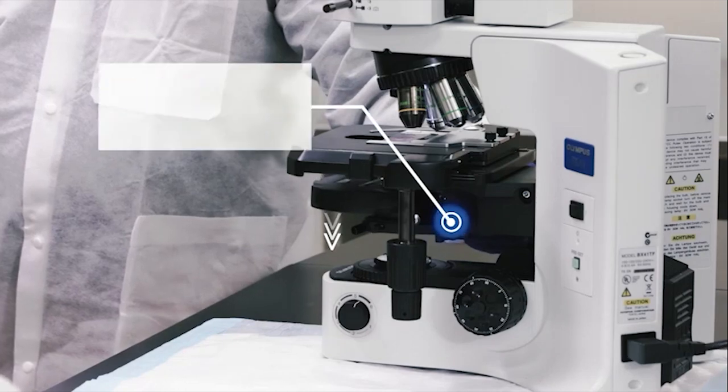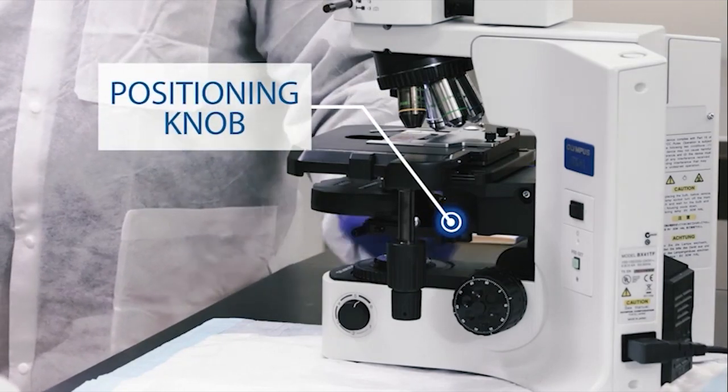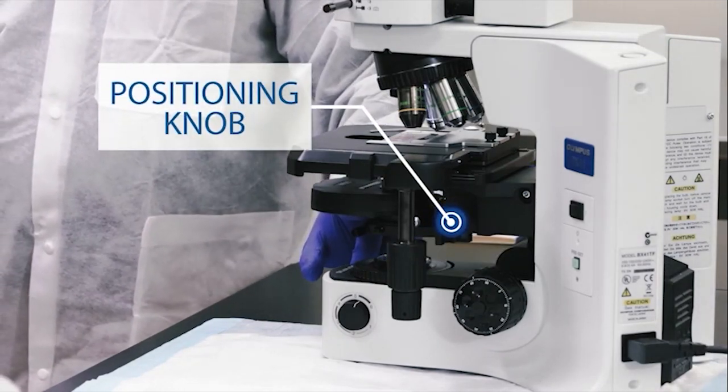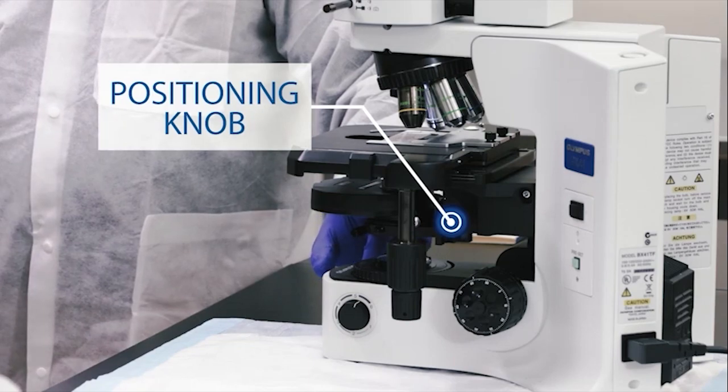Lower the condenser diaphragm with a positioning knob until a sharp, focused image of the edges of the field diaphragm is achieved.